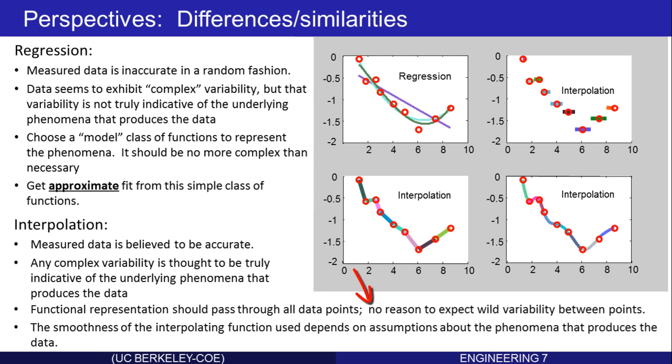There's no reason to expect wild variability between the data points. Now the smoothness of the interpolating function—here piecewise constant, here piecewise linear, and here something much smoother—should depend on prior knowledge or domain-specific expertise about the phenomena producing the data.